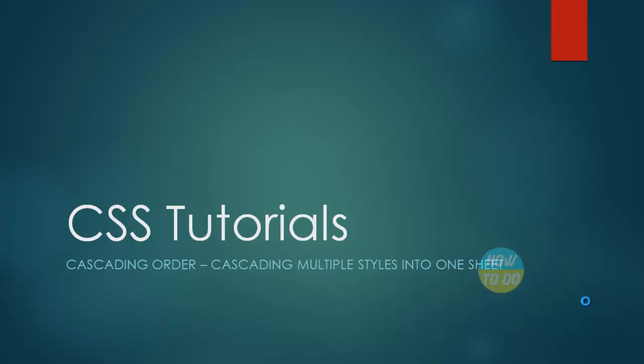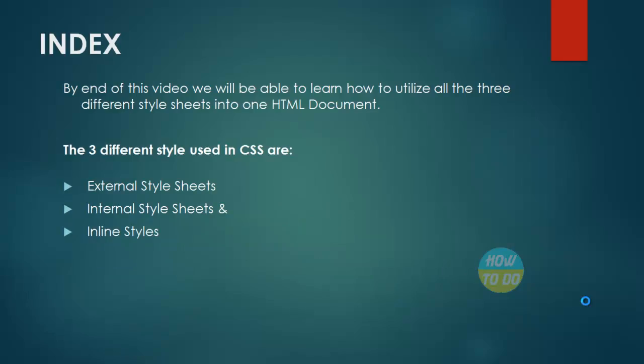I would like to explain about CSS, which is a cascading order of using multiple styles into one sheet. By the end of this video, we will be able to learn how to utilize all three different style sheets into one HTML document. The three different styles used in CSS are: the external style sheet, the internal style sheet, and inline styles.